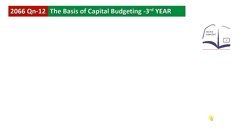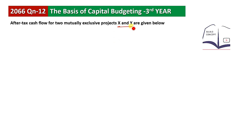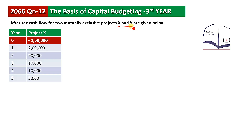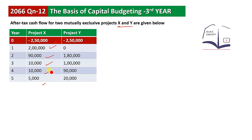Now we start the class. Question 6: After-tax cash flow of two mutually exclusive projects X and Y. The data for these mutually exclusive projects — initial investment and cash inflows for years 1 to 5 — are 2,9,000, 10,000, and 15,000. We are given investment data for both projects.